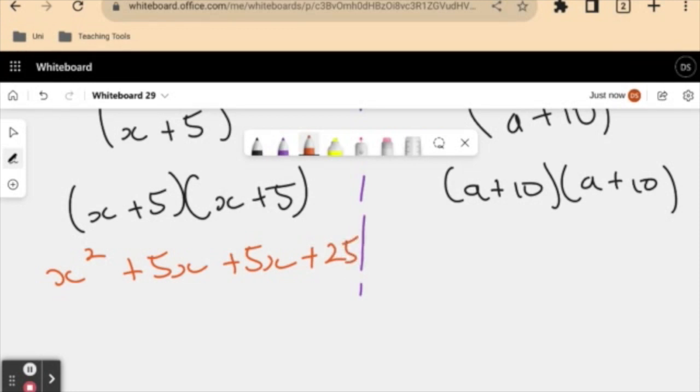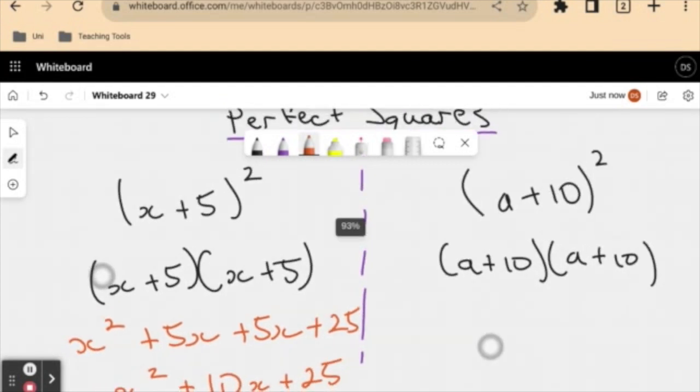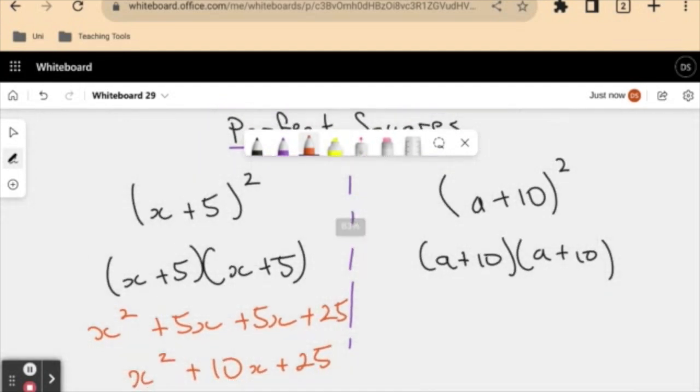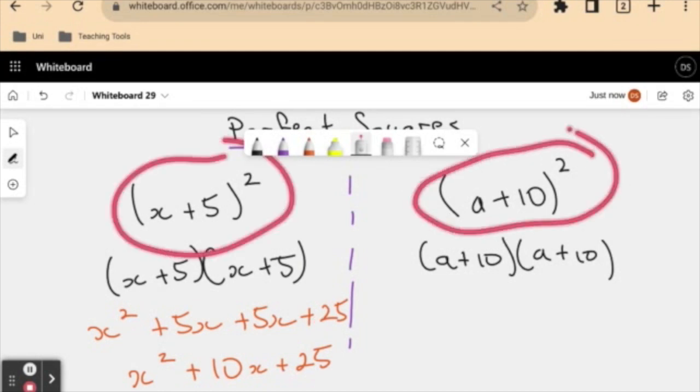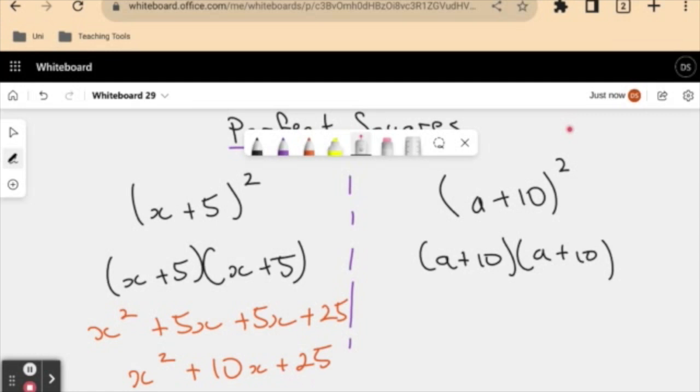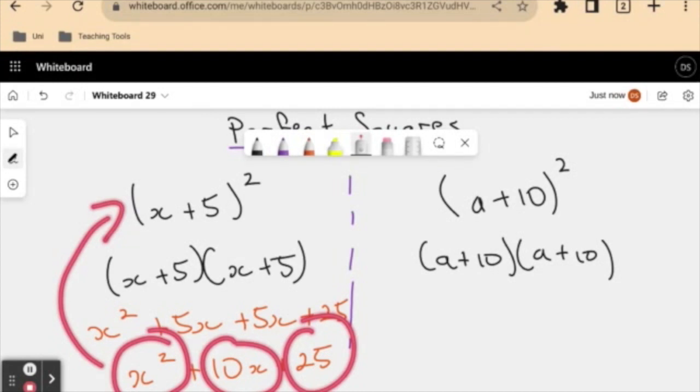And we can simplify this because we have two like terms here. We can write this as x squared plus 10x plus 25. Now, before I go on to the next one, have a little pause and think about each of these elements that I've generated and see if you can find some trend, some relationship between each of these terms and the terms in here.